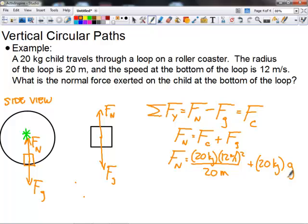So 20 times 12 squared, that's 144, times 20, which is 2880, divided by 20, gives you 144 again, plus 20 times 9.8, which is 196, plus 144, gives us the normal force that the seat is. The normal force that the seat pushes back up on the child is 340 newtons.